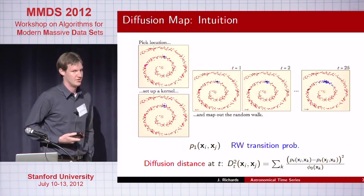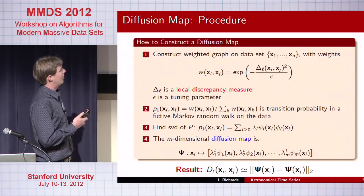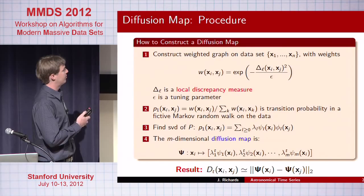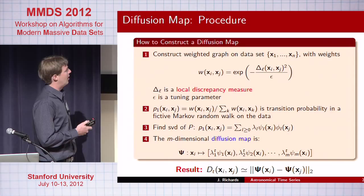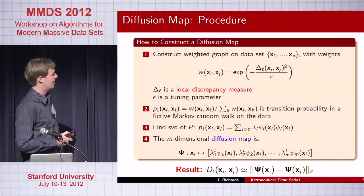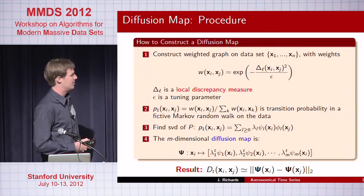In higher dimensions, this is a pretty useful technique. You set up a weighted graph on your data — each data point is a time series for a single supernova — using a Gaussian kernel with a local distance discrepancy measure, where epsilon is a tuning parameter. Normalize these to row sum to one, and that's a transition probability matrix of a Markov random walk. Taking the bi-orthogonal SVD of this P matrix, the projection of the data onto the space defined by eigenvalues and eigenvectors has the property that Euclidean distances approximately equal the diffusion distance, capturing dissimilarity in our data.